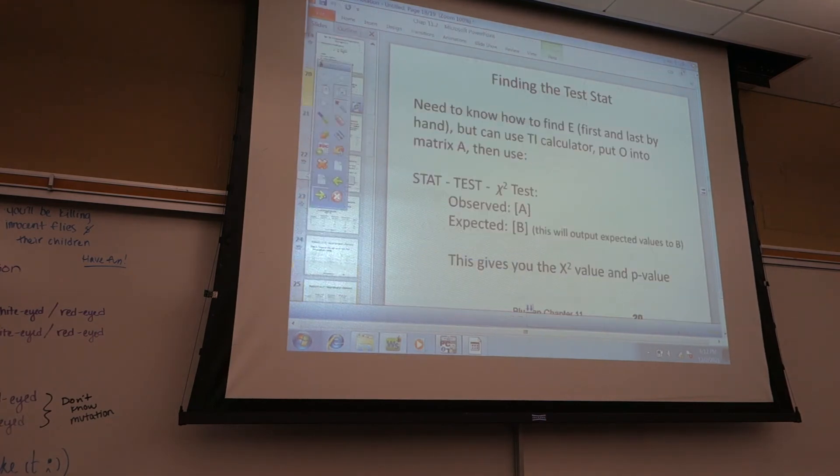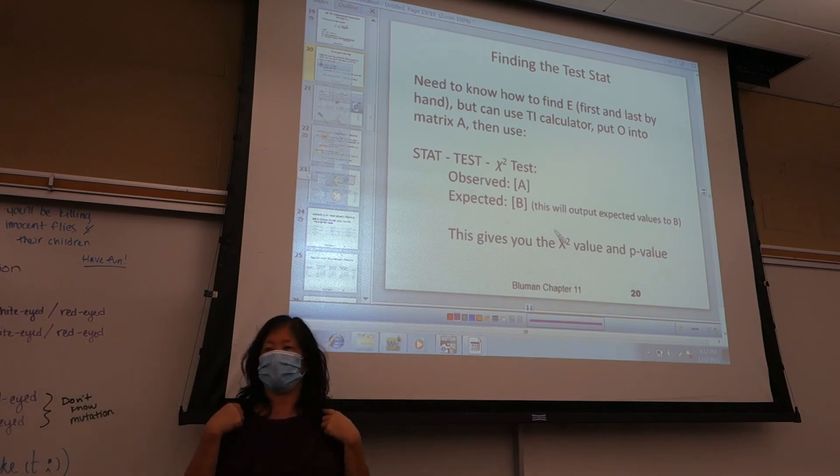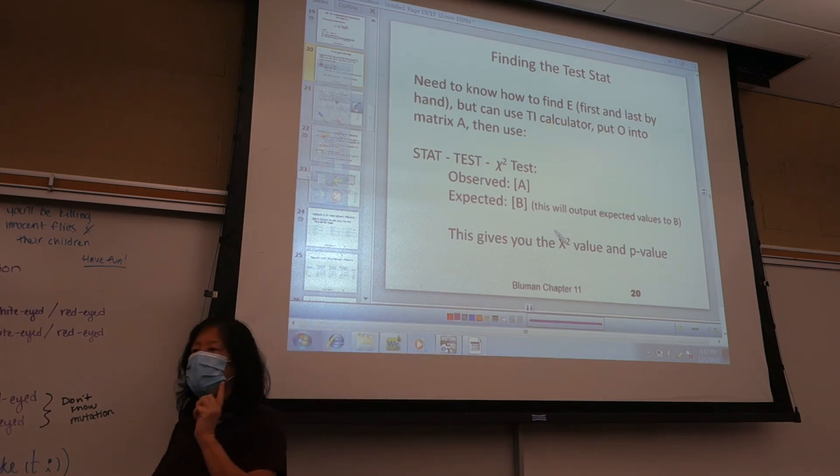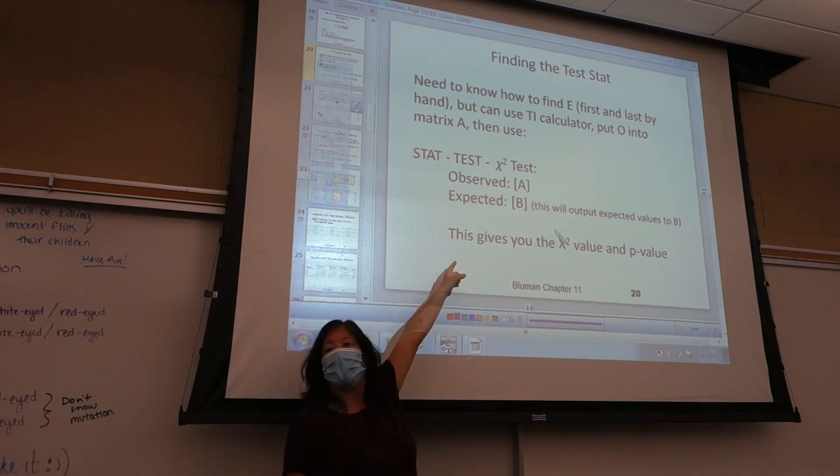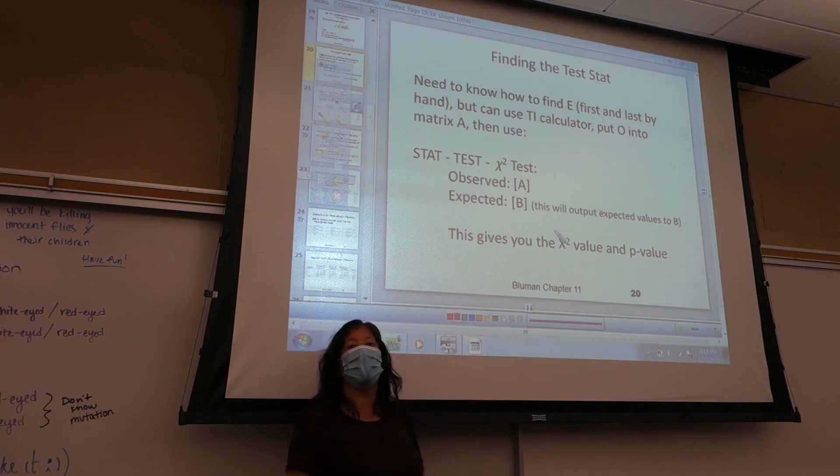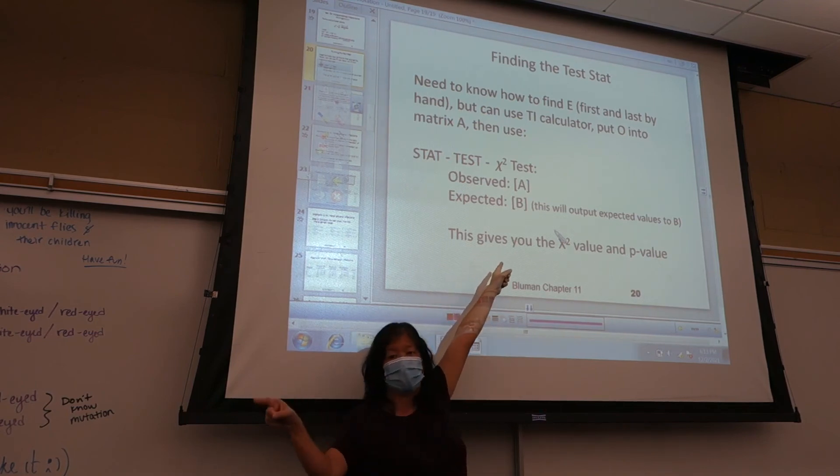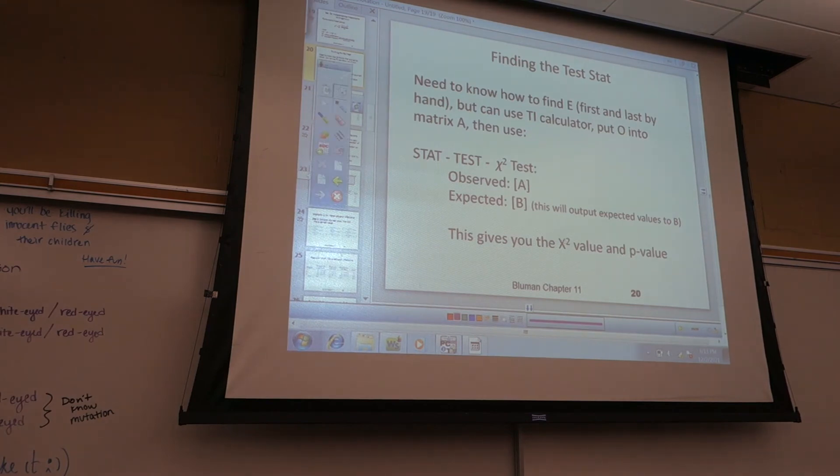So, on the calculator, we're going to use stat test chi-square test. It'll show up like this, it'll say observed A, with a little square bracket around it, that means matrix A. And that says expected B, with a little matrix around it, little square brackets around it. What that means is, you take your data, and you input it into matrix A. And that's what it's going to look for. Matrix B, everybody look up. Matrix B, you do not have to put anything into matrix B. You're telling the program, the calculator, find the expected values, and you store them into matrix B for me. So the calculator will compute all the expected values, and it will store them into matrix B. You do not put anything into matrix B. You just put your stuff into matrix A. This will make a lot more sense when we go through it, but I kind of wanted to give you the heads up on that.